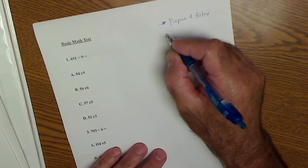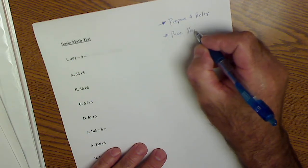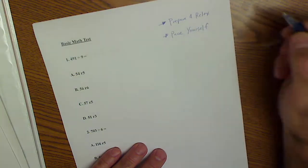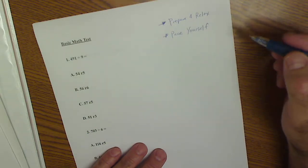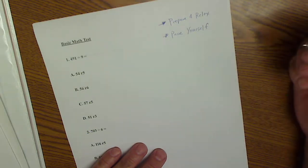Next is pace yourself. Depending on how many problems there are and how much time you have, figure that if you've got 30 minutes to do 10 problems, make sure you never spend more than about three minutes on any one problem.